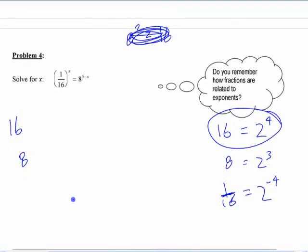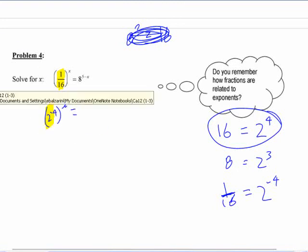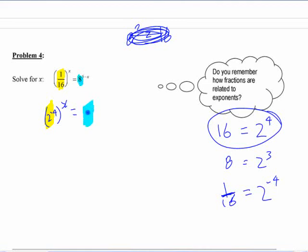So once you're okay with that, then it's the same thing, right? Take one side here, 1 16th. We're going to change that to 2 to the negative 4, and then keep the rest of it the same. And then the other side here, 8, we're going to change to, what are we going to change it to? 2 to the 3. 2 to the 3. And I'm going to put brackets here to the 5 minus x, just so we see where it came from.